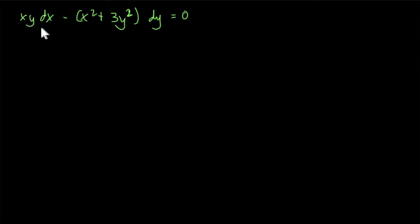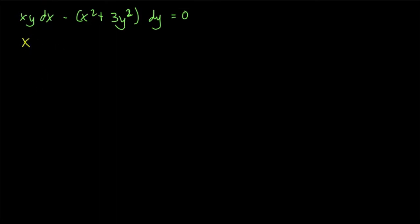We need to determine which variable we are going to replace. For this given equation, the simpler coefficient is in M, and the derivative of that is in terms of x. Therefore, the variable we are going to replace is x. So x = v·y, and dx = v·dy + y·dv.